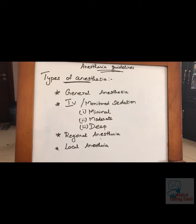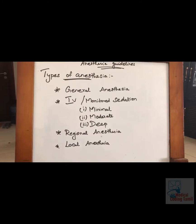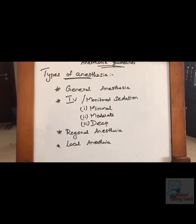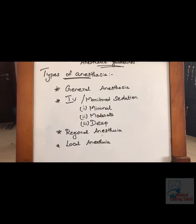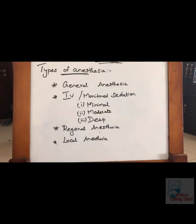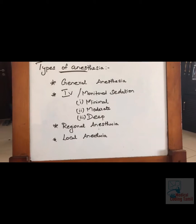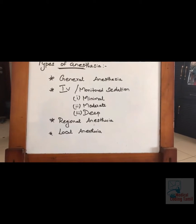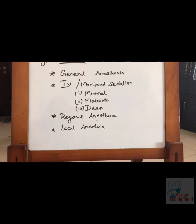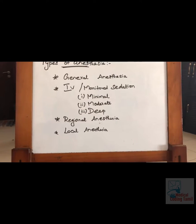Before going to the guidelines, we will go through the types of anesthesia. There are four main types: general anesthesia, IV or monitored sedation, regional anesthesia, and local anesthesia. Within IV or monitored sedation, there are three subtypes: minimal sedation, moderate sedation, and deep sedation.